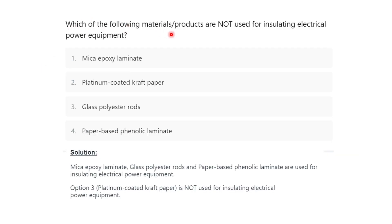Next question: which of the following materials or products are NOT used for insulating electrical power equipment? Options are: mica epoxy laminate, platinum coated kraft paper, glass polyester rod, and paper based phenolic laminate. Mica epoxy laminate, glass epoxy rod, and paper based phenolic laminate are used for insulating electrical power equipment. Platinum coated kraft paper is not used, so option 2 — platinum coated kraft paper — is the correct answer.